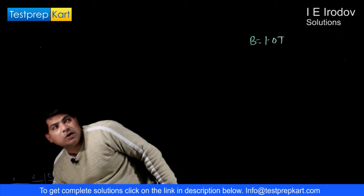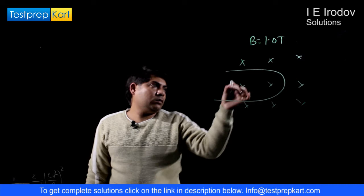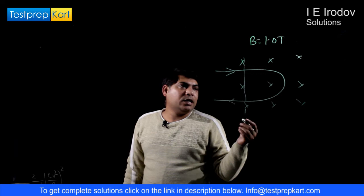So there is a proton which enters in a transverse magnetic field and just covers a semicircular path and returns back from the medium. So we have to find out the energy radiated to the initial kinetic energy.